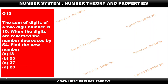Hello everyone, welcome. Let us discuss one UPC based on number system problem. The sum of the digits of a two-digit number is 10. When the digits are reversed, the number decreases by 54. Find the new number. To solve this kind of problem we have two methods: one is the elimination method and one is the procedural method.